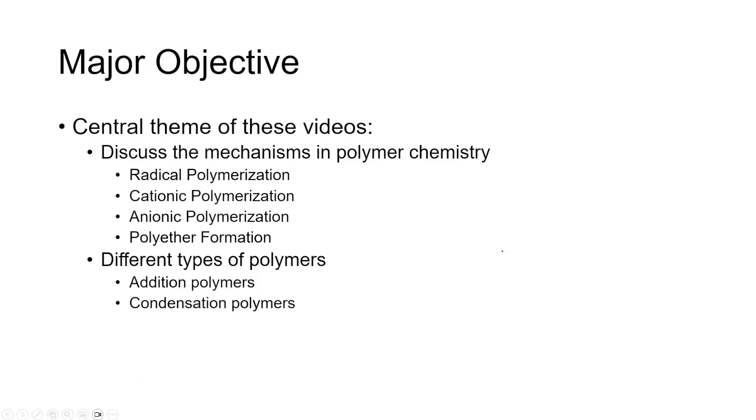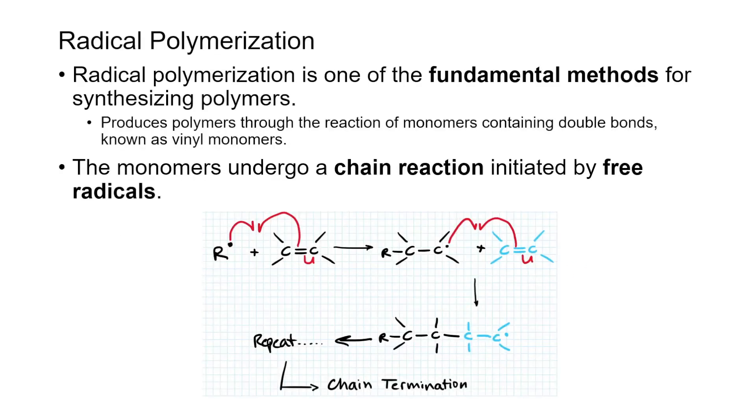Number one: radical polymerization. Radical polymerization is one of the fundamental methods we use as synthetic chemists to synthesize polymers. As the name suggests, it involves the use of a free radical. We'll discuss how we produce these free radicals as well as the reaction of monomers. These monomers contain double bonds and are known as vinyl monomers, as you can see on screen.